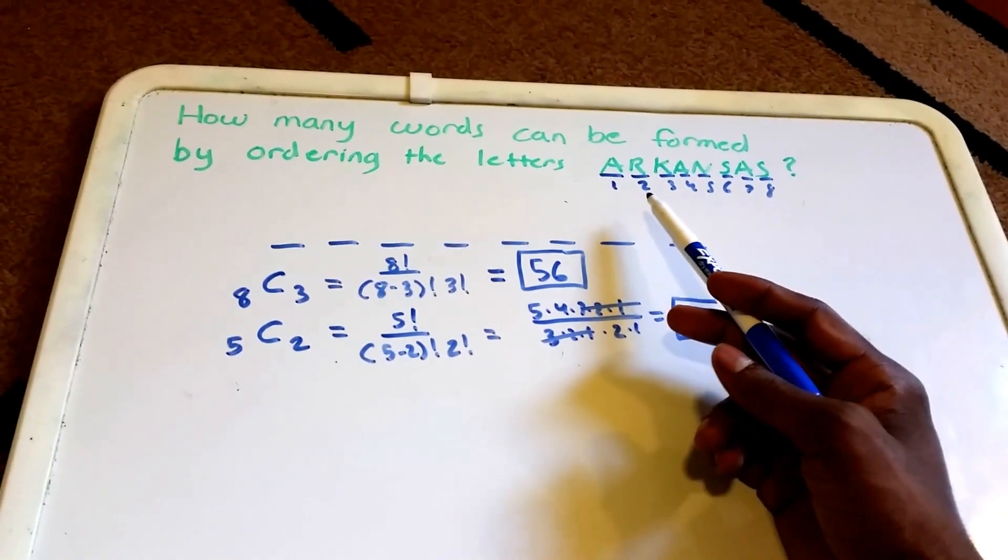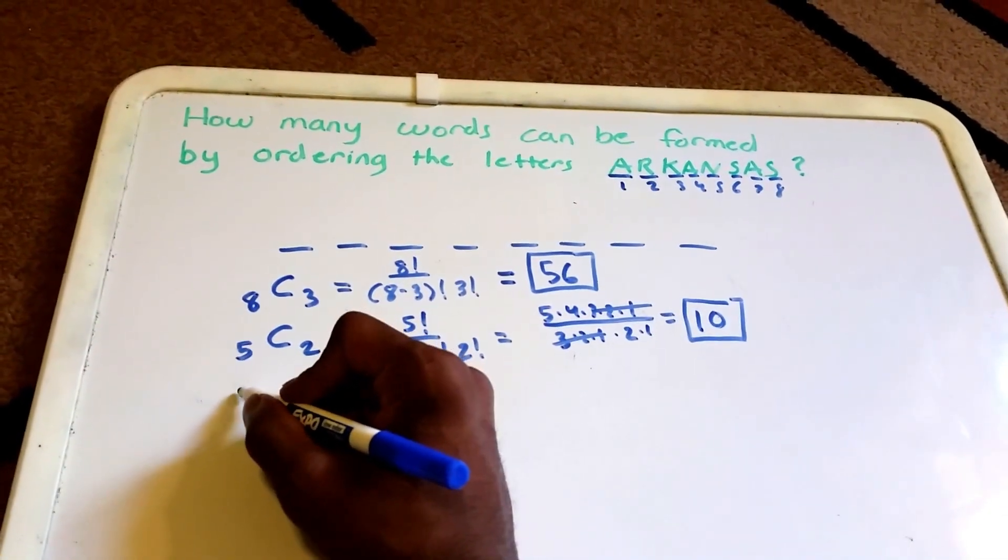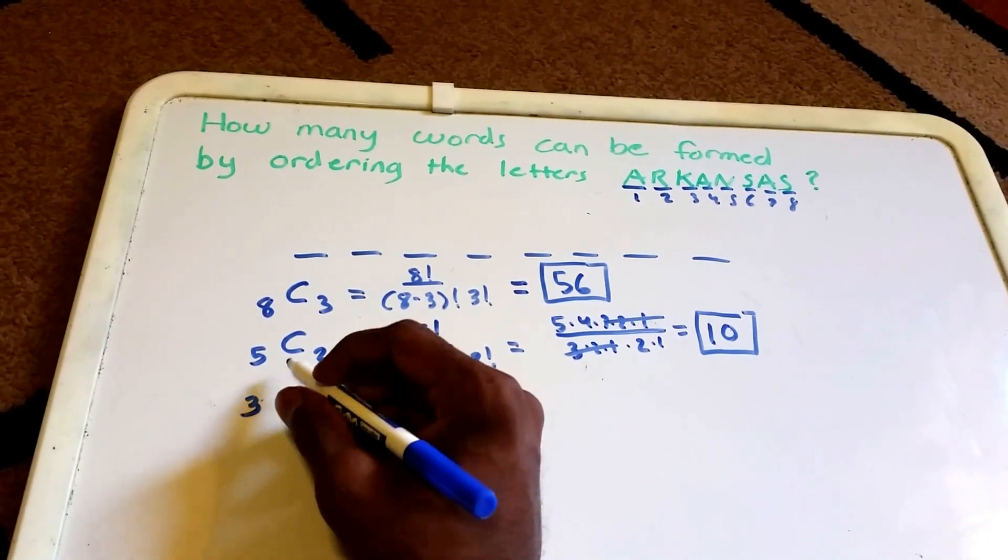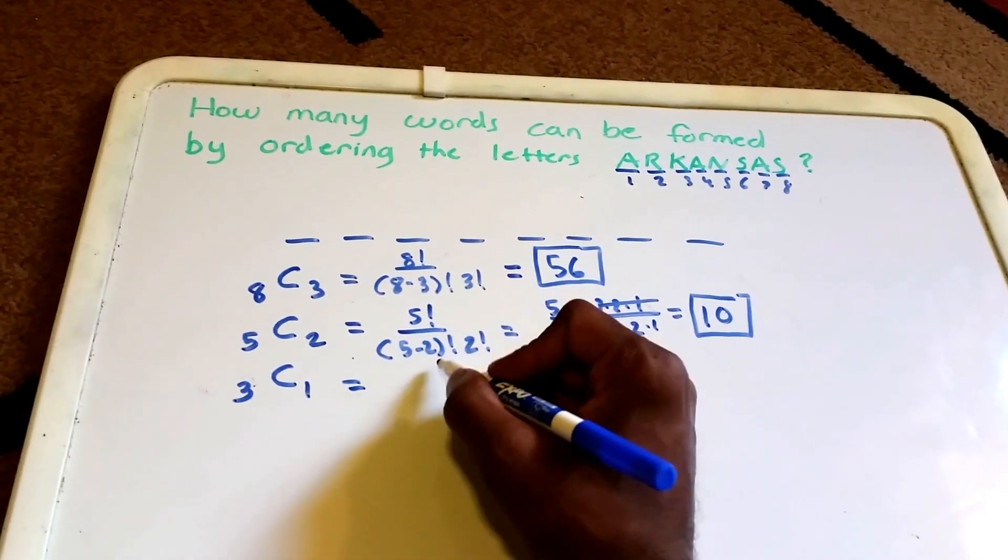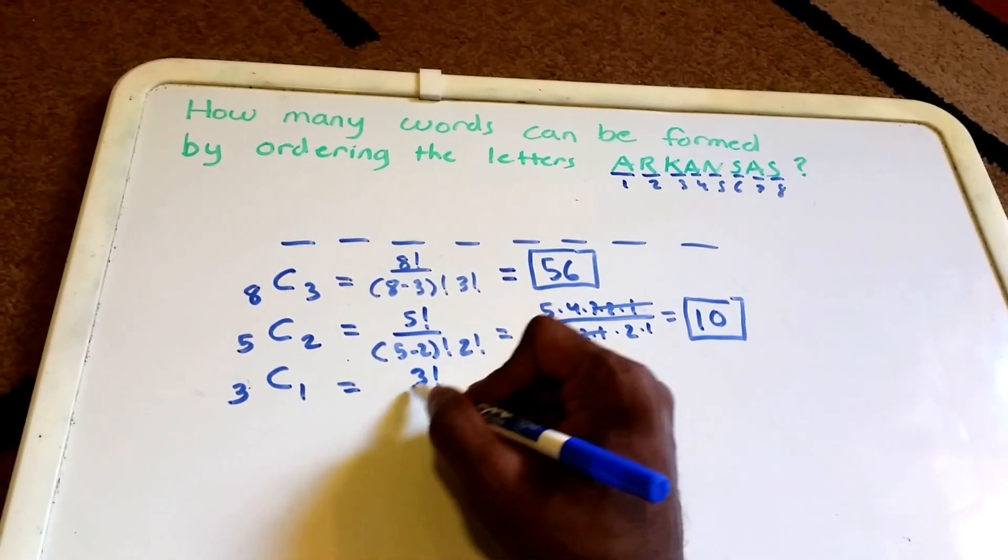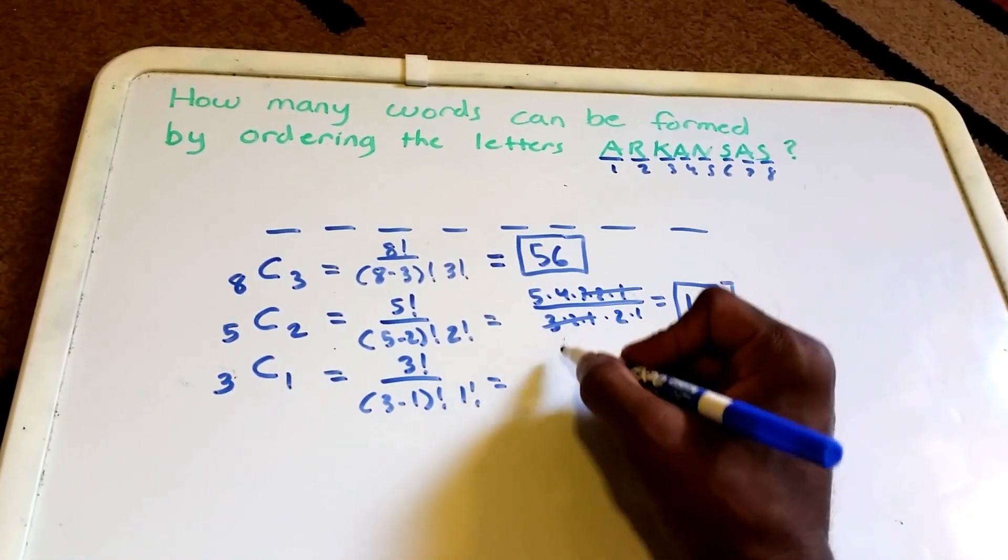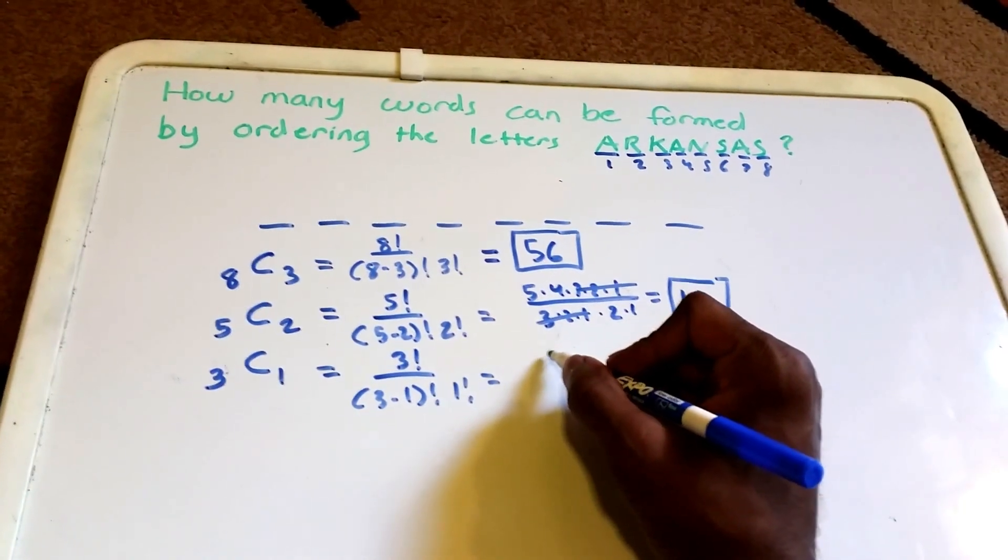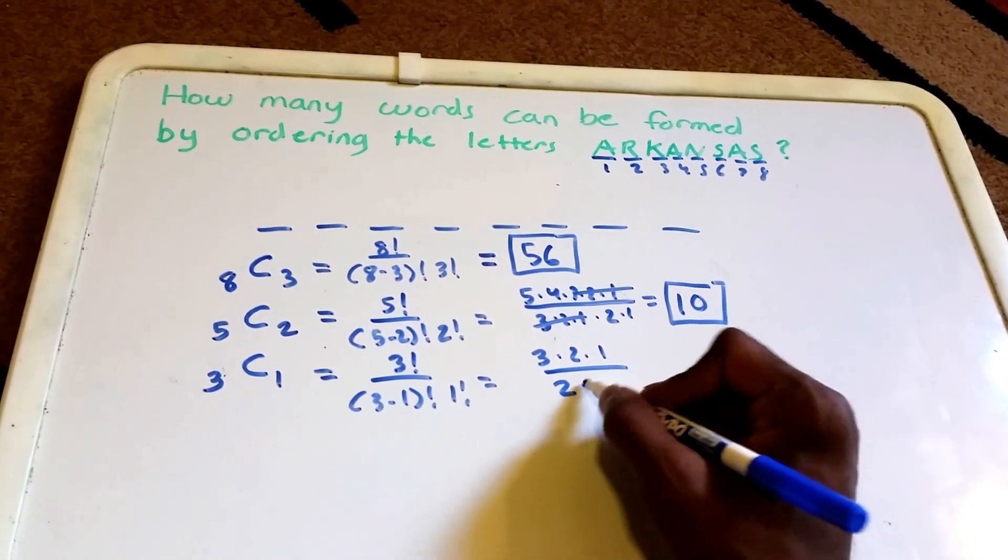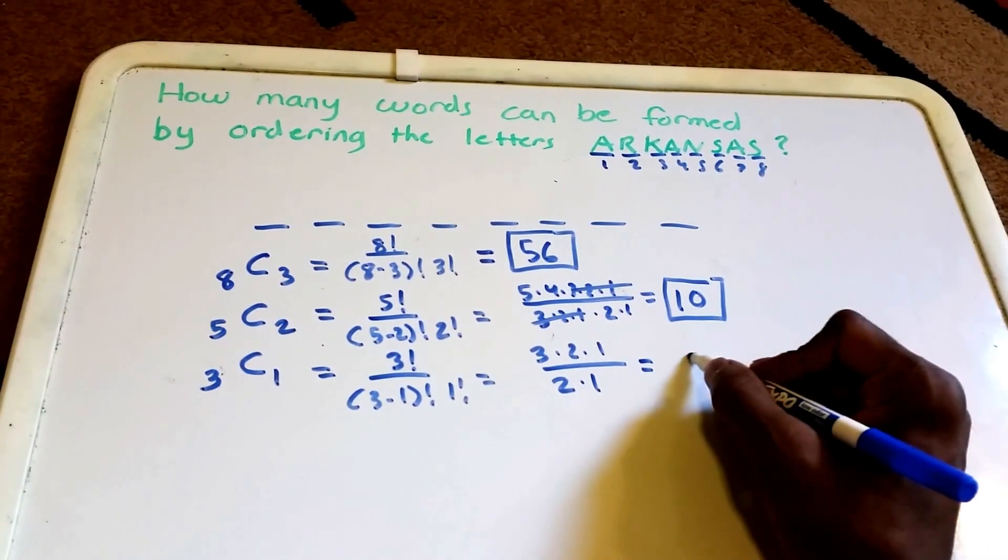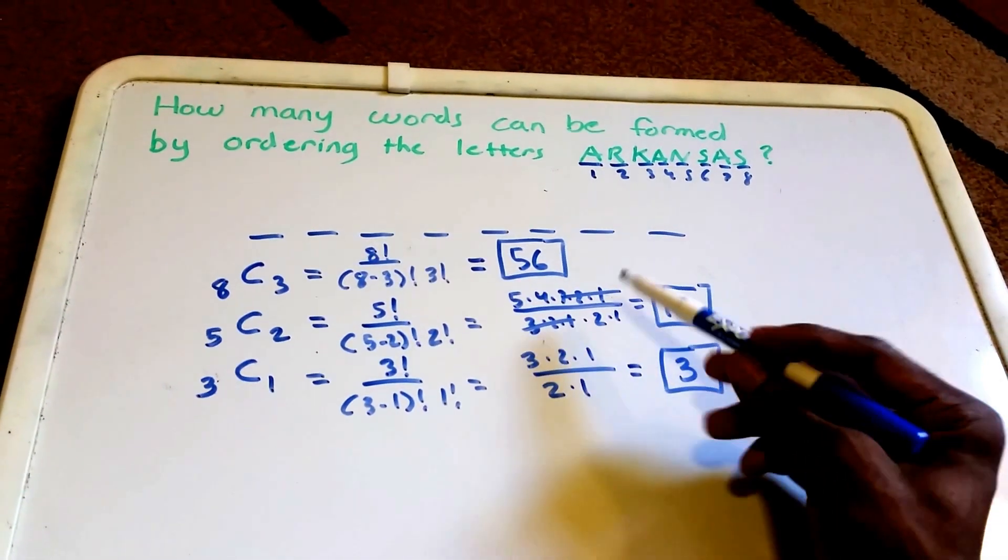Let's take a look at the R and place the R in any one of the remaining three positions. We have three positions left and we want to choose one R. This is equal to 3 factorial over 3 minus 1 factorial times 1 factorial, which is equal to 3 times 2 times 1 over 2 times 1, which is equal to 3.